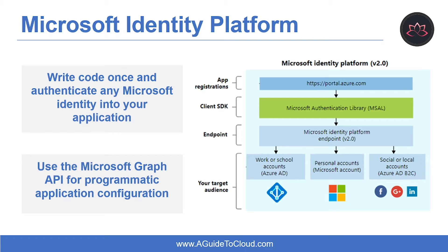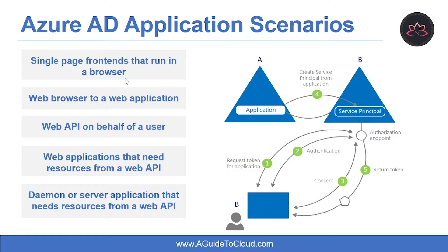Any application that outsources authentication to Azure AD needs to be registered in a directory. This step involves telling Azure AD about your application. In Azure AD, an application object describes an application as an abstract entity. At deployment time, Azure AD uses a specific application object as a blueprint to create a service principal, which represents a concrete instance of an application within a directory or tenant. It's the service principal that defines what the app can do in a specific target directory, who can use it, what resources it has access to, and so on. Azure AD creates a service principal from an application object through consent.